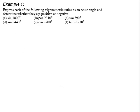Express each of the following trigonometric ratios as an acute angle and determine whether they are positive or negative. Let's start with part A: sine 1000 degrees.